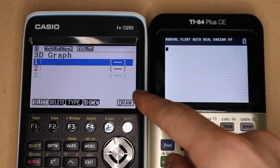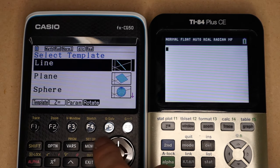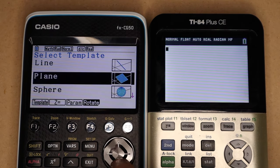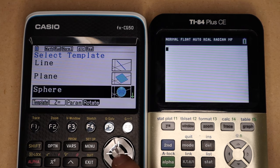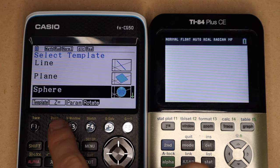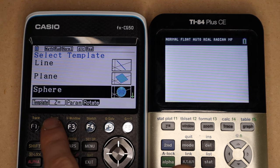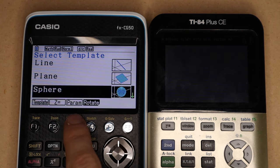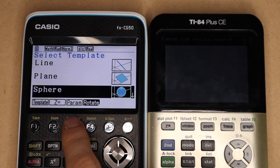So you can graph up to three functions at a time, and you can go in here and pick the type of function you want, and then the calculator will give you a template to enter your function in. Or if you want to, you can just graph any generic 3D function, and you can also graph a generic parametric 3D function.